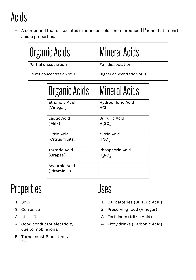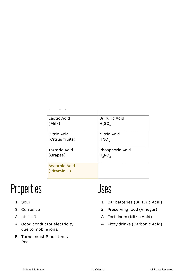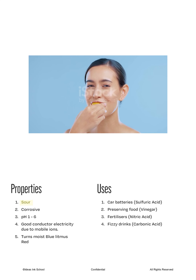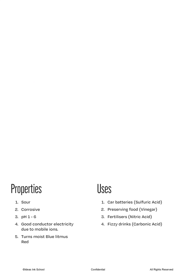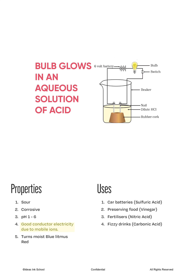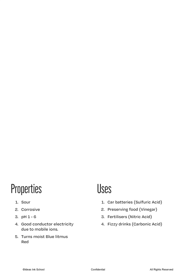Next, we will talk about the properties and uses of acids. Due to the presence of hydrogen ions that impart acidic properties: number one, acids taste sour; number two, acids are corrosive; number three, their pH value is less than seven; number four, acids are good conductors of electricity due to the presence of mobile ions; and lastly, number five, acids turn moist blue litmus paper red. We will discuss more about indicators later on in this chapter.